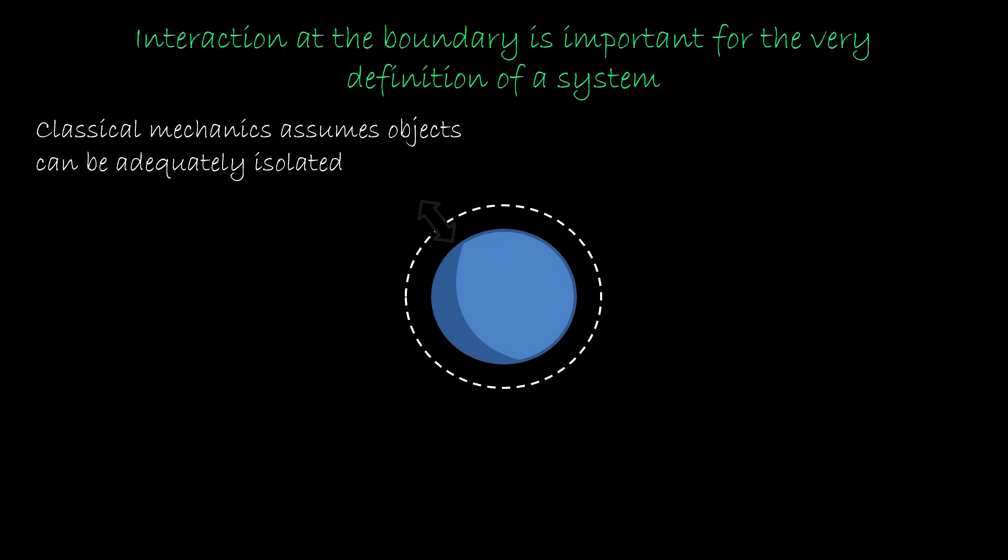Classical mechanics assumes objects, at least in some conditions, can be adequately isolated. That the interaction with the environment is negligible. This is what allows us to describe the system as an infinitely precise quantity plus a perturbation on top. Even when we have noise, we always assume that in principle we can turn it off. Unfortunately this view is so ingrained in our head that our instinct is to think there is always a true infinitely precise value.